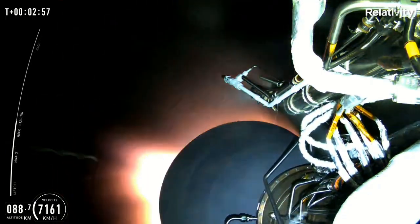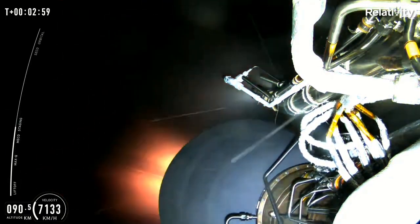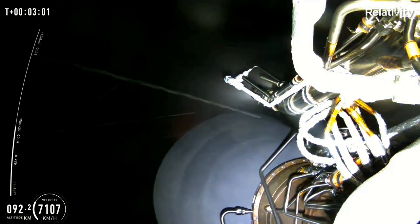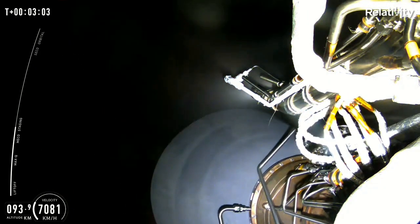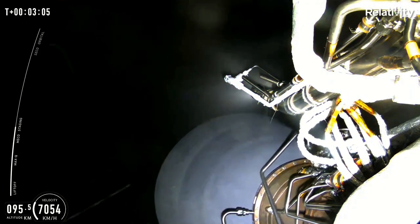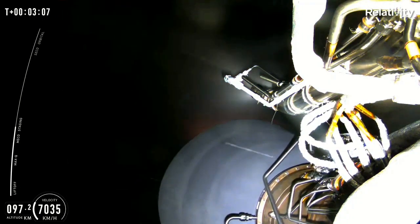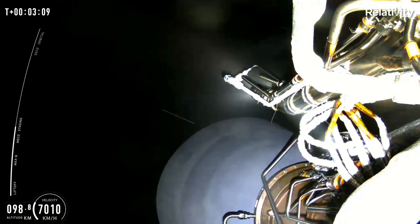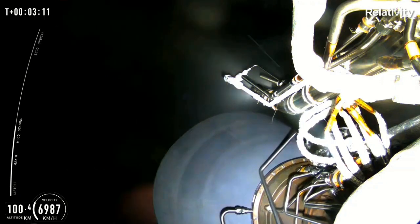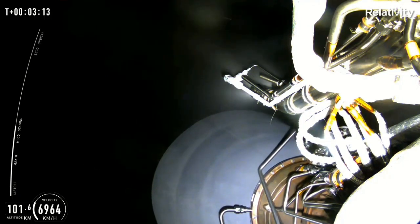As you can see, we were waiting for MECO and upper stage ignition. This means that we had main engine cut off for stage one, and directly following that we had second stage ignition, which you can see the Aeon vacuum engine in that beautiful view in the night sky.